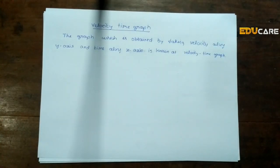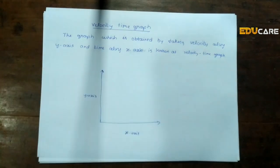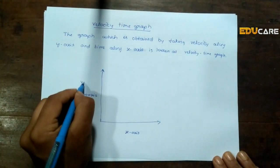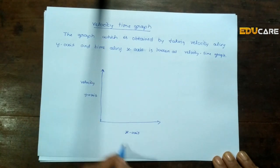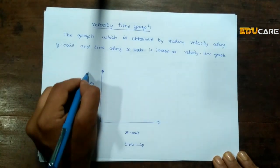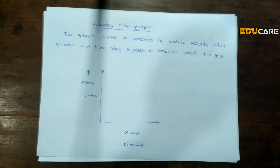Let us draw a graph of two coordinate axes containing the x and y axis. If we take velocity along the y-axis and time along the x-axis, then we can say that this is a velocity time graph.